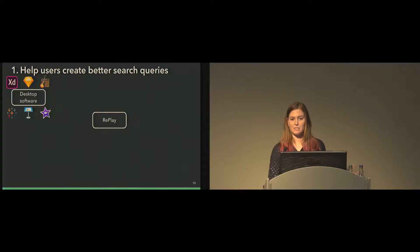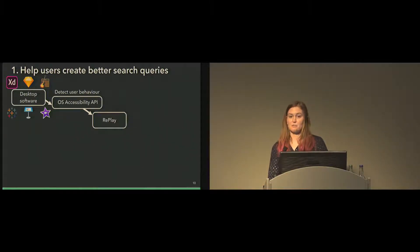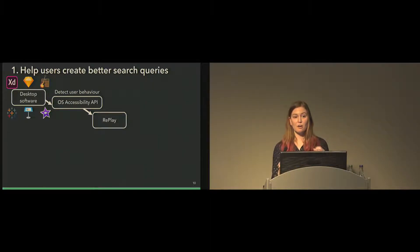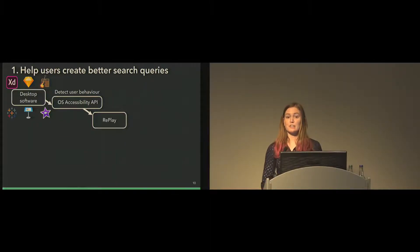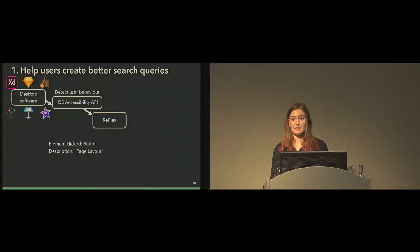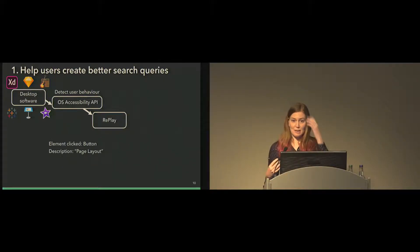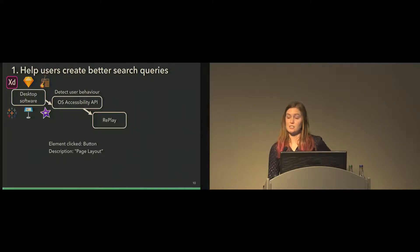How do we connect Replay with all these different kinds of desktop software? We use accessibility APIs. Most major operating systems have an API for accessibility, really meant for application developers to make their apps accessible by labeling all the different interface elements so that things like screen readers can read what different buttons do. We use this API to get information about other applications — whenever the user clicks on a tool or button, Replay can get things like the type of element clicked (e.g., a button) and a description of what it does (e.g., 'page layout'). This is a great way to understand what is visible to the user and gather application-specific language across different applications.